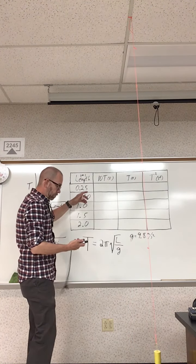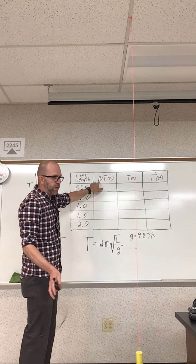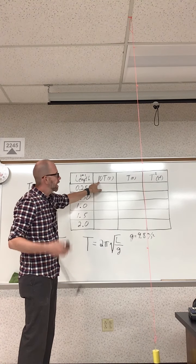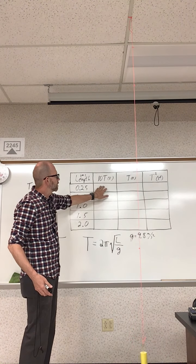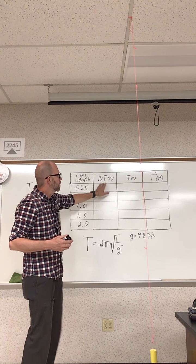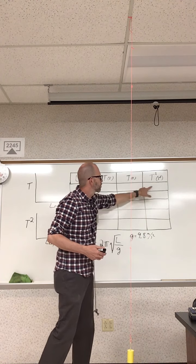We'll go ahead and record, but what I'm going to do is let it swing ten times so I can cut my error in timing down by ten. So I'll time how long it takes for ten complete periods and then we'll just divide it by ten to get what one period is, and then we'll square it.